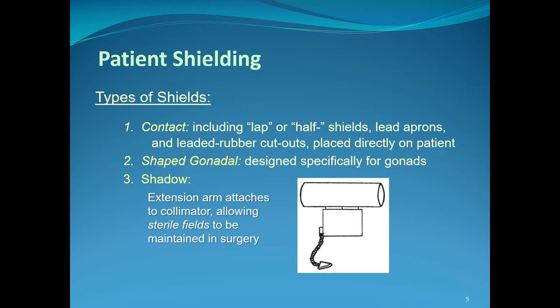Contact shields are designed to absorb scatter radiation. A good example would be the type of shield used to the front of the patient at waist level for a chest x-ray, to mitigate the absorption of backscatter within the patient. Other types of shields include shaped gonadal shields, which are designed specifically for the gonads.